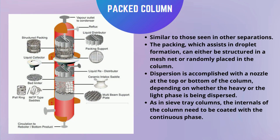Next is packed column extractors. Packed column liquid-liquid extractors are similar to those seen in other separations. The packing, which assists in droplet formation, can either be structured in a mesh net or randomly placed in the column. Dispersion is accomplished with a nozzle at the top or bottom of the column depending on whether the heavy or light phase is being dispersed. As in sieve tray columns, the internals of the column need to be coated with the continuous phase.